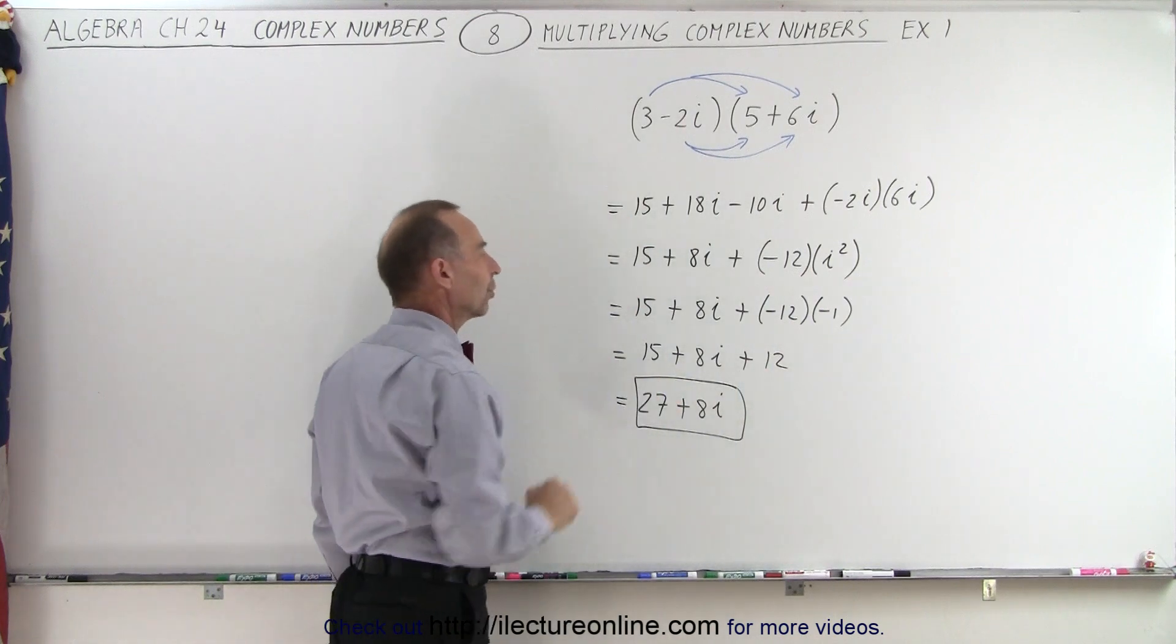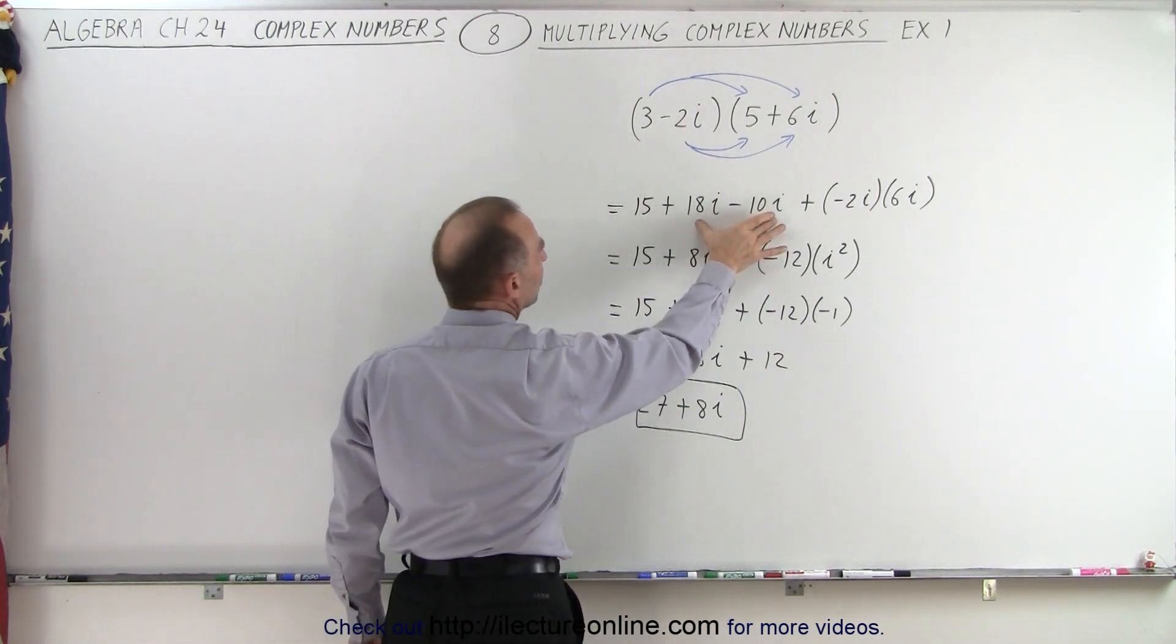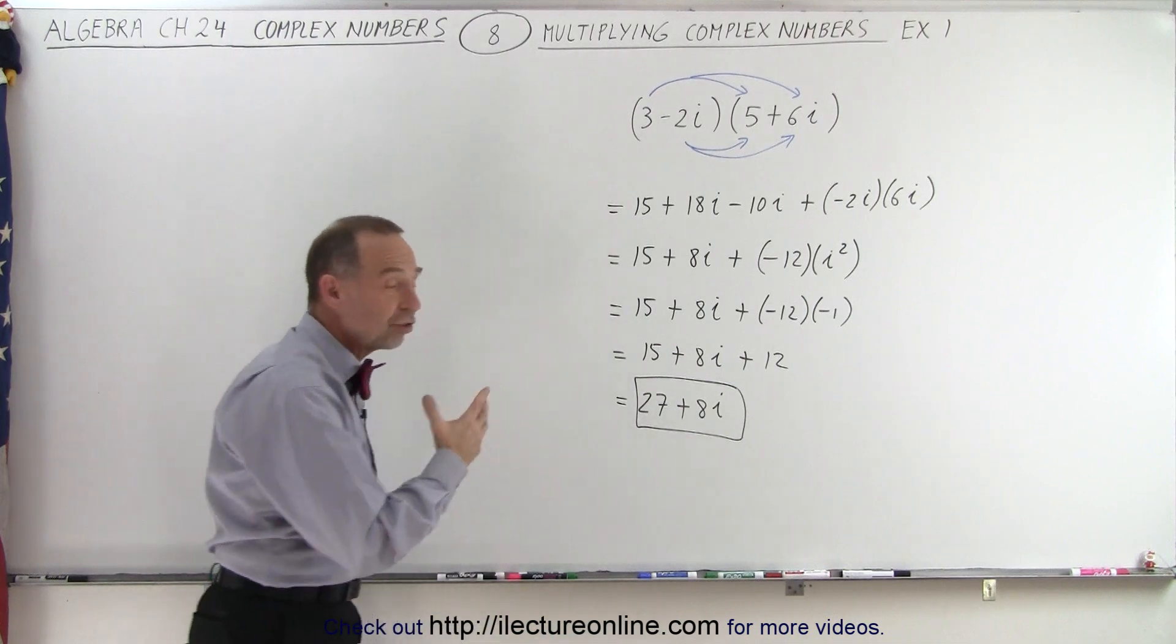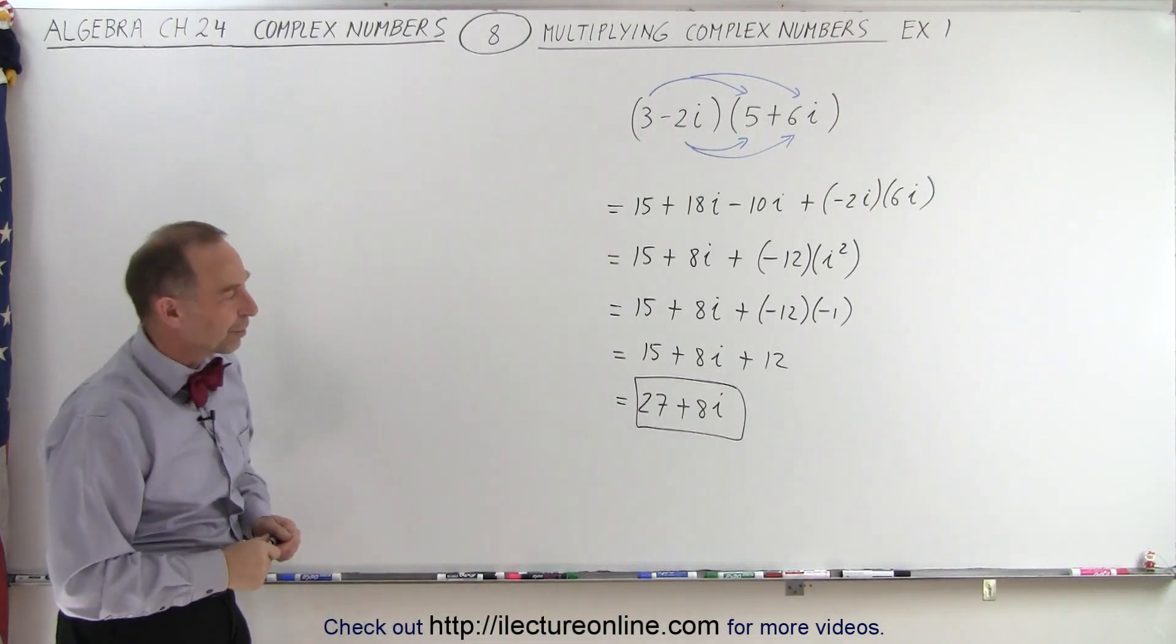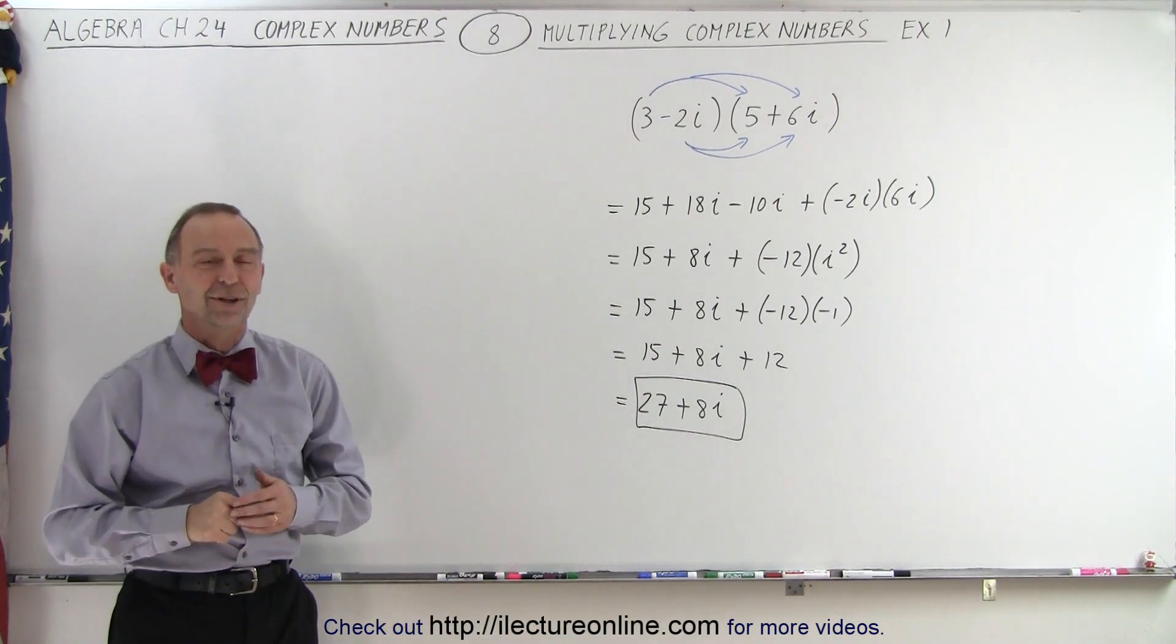Negative 1 times negative 12 is a positive 12. Add that to the 15 to get 27. And then we add the two middle terms together. You end up with the complex, the imaginary part of the complex number. And that is how it's done.